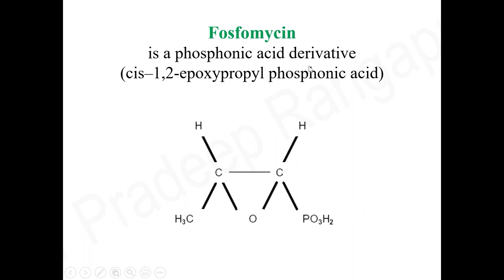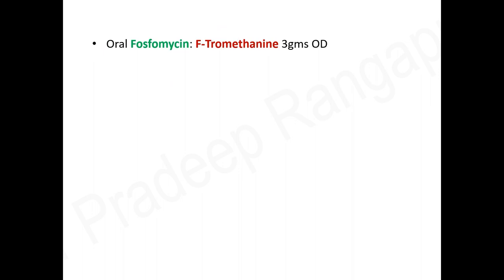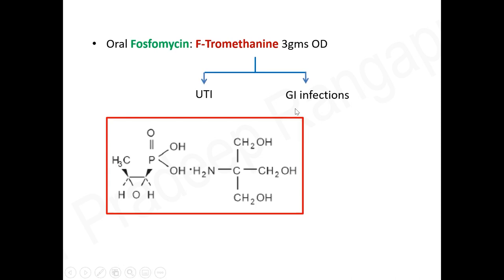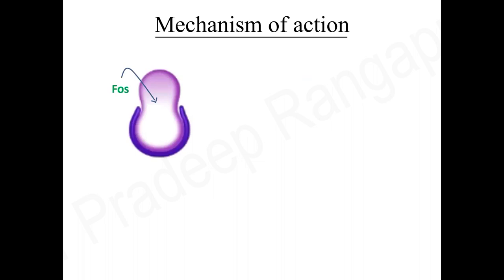Phosphomycin is a phosphonic acid derivative — its full name is 1,2-epoxypropyl phosphonic acid. The main backdrop is oral phosphomycin, used in a dose of 3 grams once a day, extensively used by urologists for MDR-resistant urinary tract infections and some GI infections. The question now is whether the IV formulation holds the same promise for treating MDR infections in the urine, XDR infections, or other infections in the body.